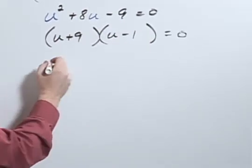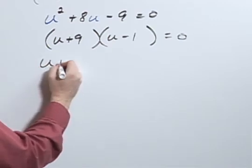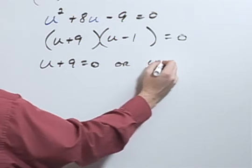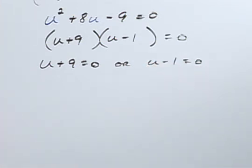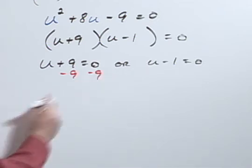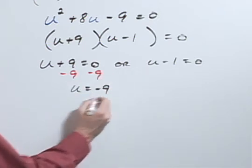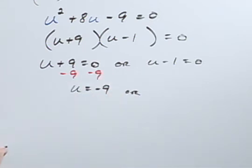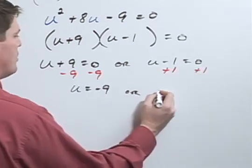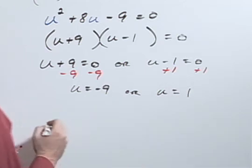Next, let's set each piece equal to 0. So u plus 9 equals 0 or u minus 1 equals 0. I can subtract 9 from both sides to get u equal negative 9 or I could add 1 to both sides to get u equal 1.